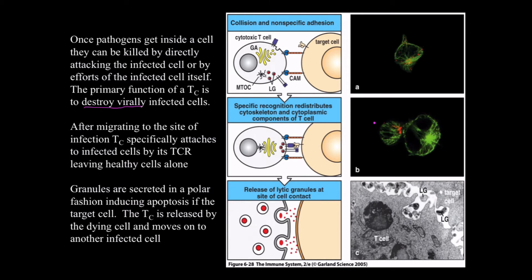Unlike the natural killer cell which listens to multiple signals before acting, the cytotoxic T cell makes its decision right away. Granules are secreted in a polar fashion — meaning a clear, direct sequence. We can see in this picture what appear to be integrins and cell adhesion molecules, then the migration of the Golgi apparatus and microtubule organizing center into close proximity to drop the entire payload of lytic granules, resulting in apoptosis.